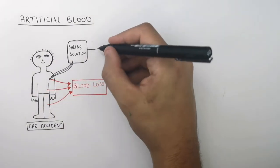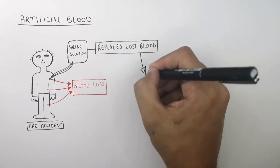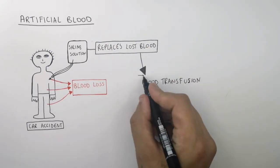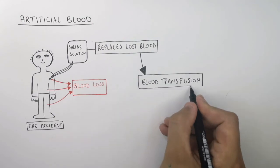And this saline solution replaces the lost blood until they get to hospital where they'll get a blood transfusion to replace the blood cells they lost in the car accident.